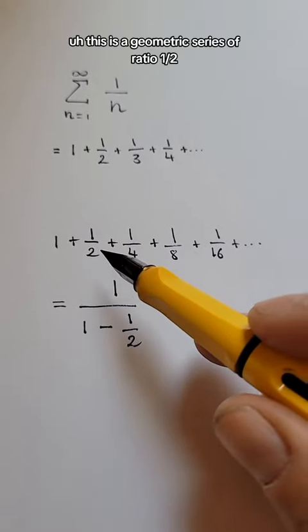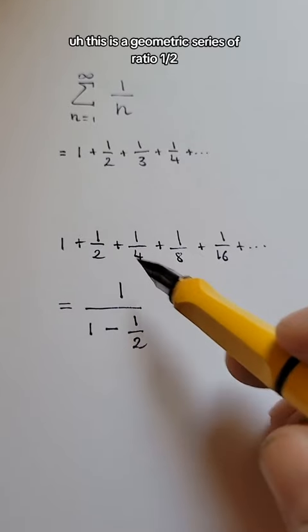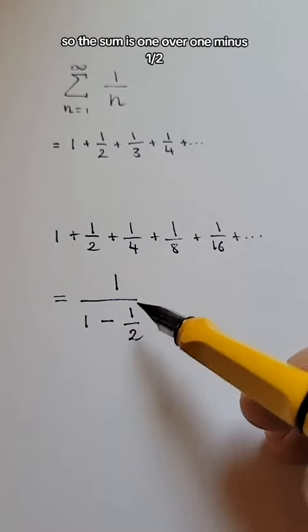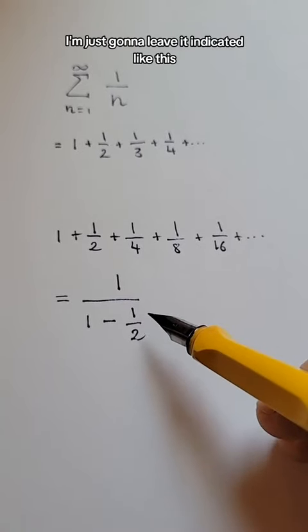This is a geometric series of ratio 1/2, so the sum is 1 over 1 minus 1/2. I'm just going to leave it indicated like this.